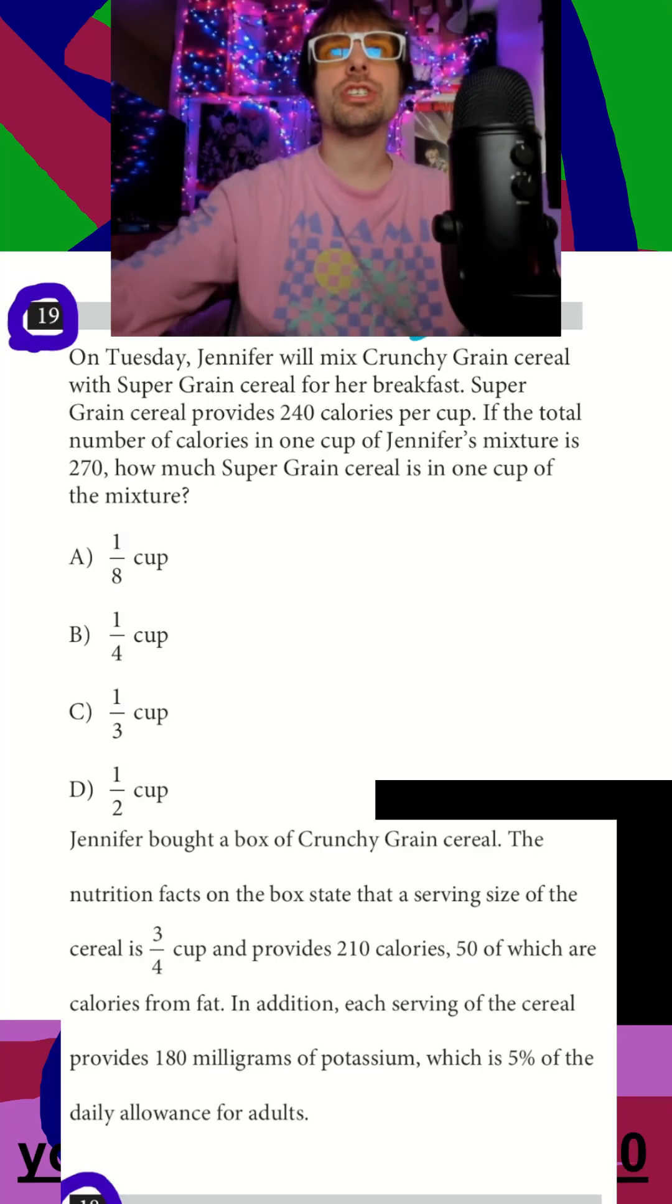We have Jennifer will mix Crunchy Grain cereal with Super Grain cereal. The Super Grain provides 240 calories per cup, so let's go ahead and organize this.